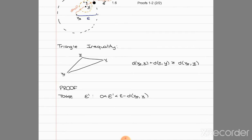We define epsilon-dash as the radius, so it's greater than zero, and we make it smaller than epsilon minus the distance between x₀ and x. What we're trying to prove is that every point in this neighborhood is also in the bigger one. So we take a point y which belongs to this neighborhood with radius epsilon-dash, and we have to prove that it's also going to belong to the bigger neighborhood.